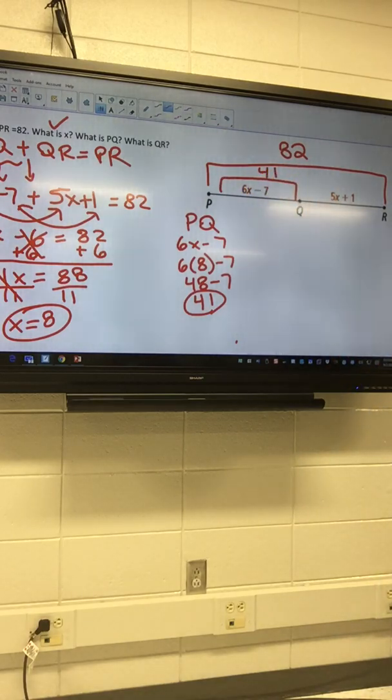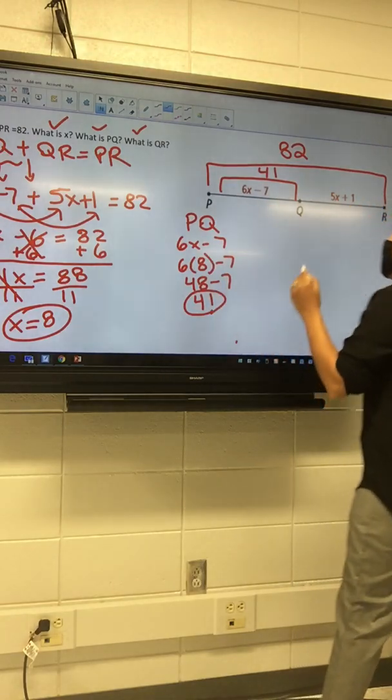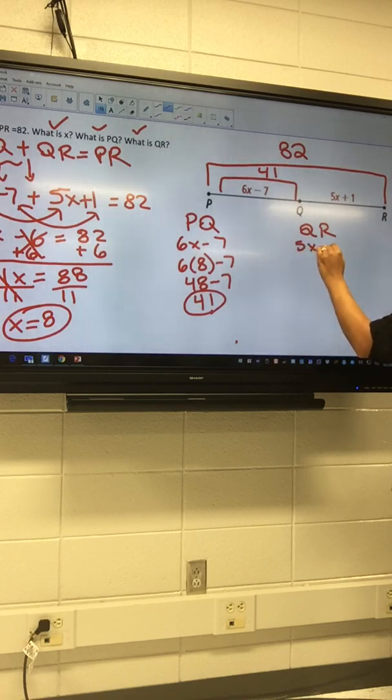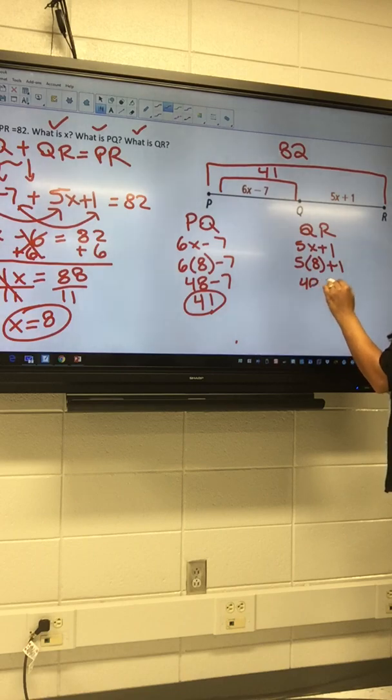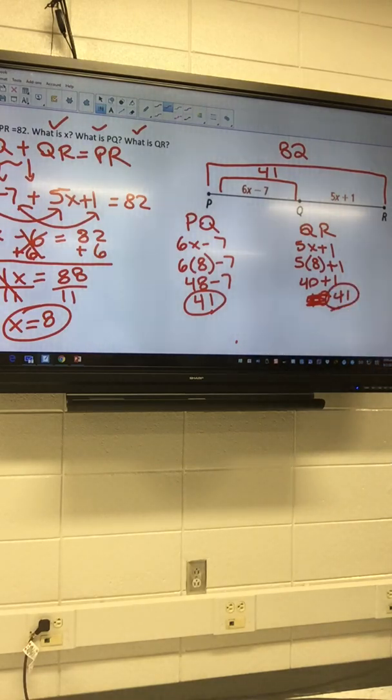For those of you guys that can do the shortcut way, do it. If you didn't understand how I had the shortcut way, do the next way. So my next question, and I'm gonna do it the long way up here, would be QR. So I got QR, and my QR value is 5x plus 1. And I'm gonna plug in my 8. 5 times 8 plus 1. 40 plus 1, which is 41.